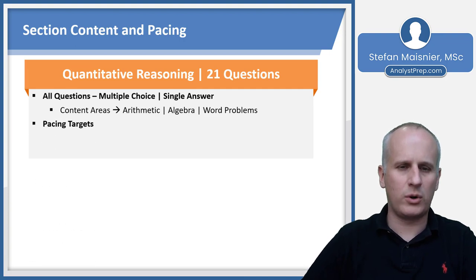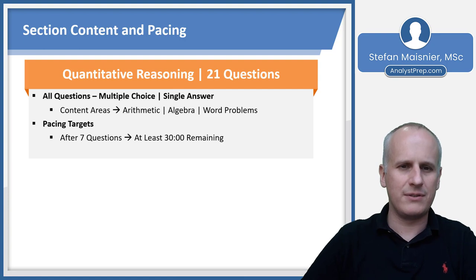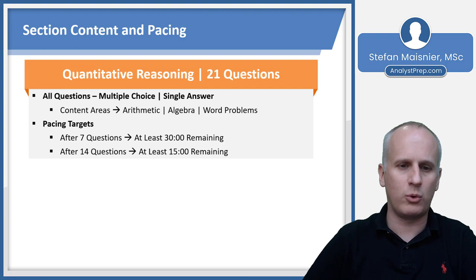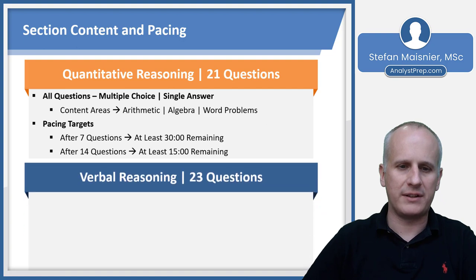For pacing within the 45-minute Quantitative Reasoning section: after seven questions, you should have at least 30 minutes remaining. Even though earlier questions tend to matter more, you now have the guess-skip-and-return functionality. After 14 questions, you need to have at least 15 minutes remaining. It is imperative that you finish. If need be, you can skip up to two questions blindly, but you'd rather work through all the problems you can confidently handle, being a bit more aggressive with your pacing now that you have that skip-and-return functionality.